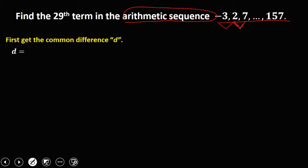Now, using this formula, a sub 2 minus a sub 1, or you can use a sub 3 minus a sub 2. Then substitute now the values. So a sub 2, that's positive 2, minus a sub 1, that's negative 3.